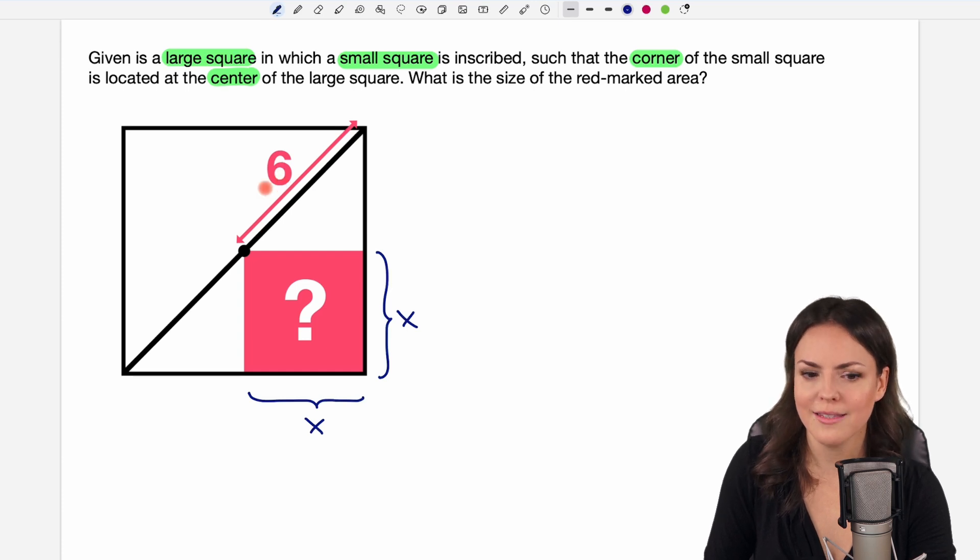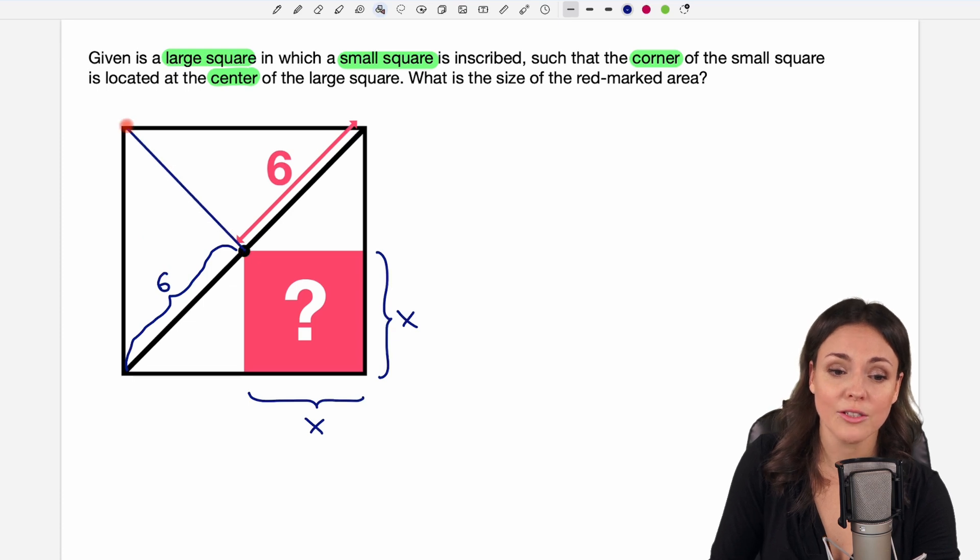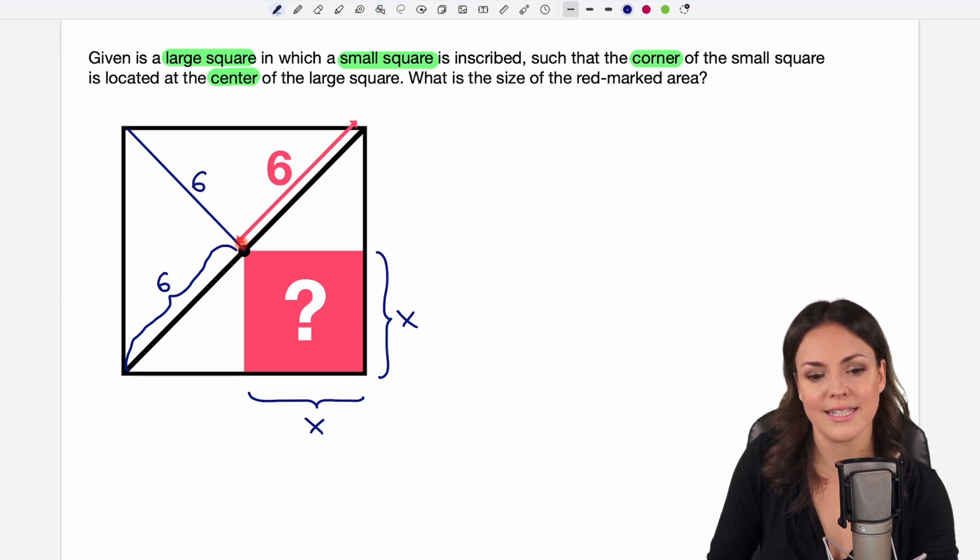That also means that from the center to this corner we also have length 6 as well as from the center to this corner here this side is of length 6 and as well from the center to this corner length 6.